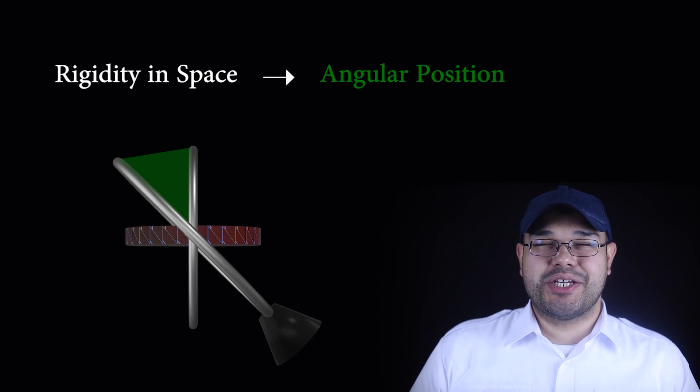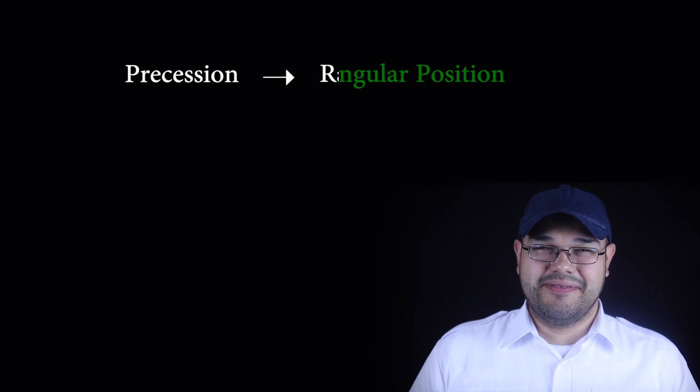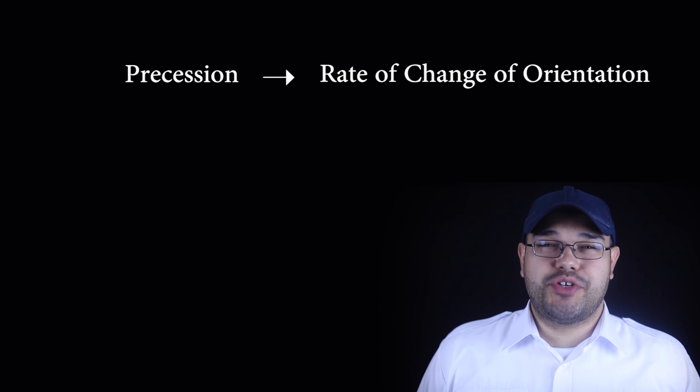Rigidity in space and precession allow us to measure different things. Rigidity in space allows us to measure orientation or angular position. Precession allows us to measure the rate of change of orientation. The terminology used to refer to these gyros is angle gyros and rate gyros. The difference between an angle gyro and a rate gyro is in the mounting of the gyro, not the gyro itself.